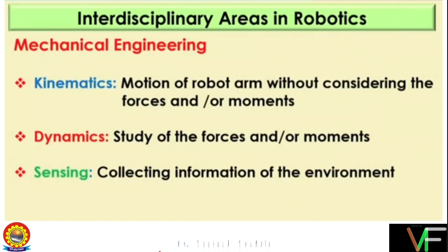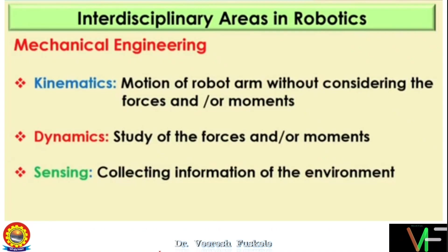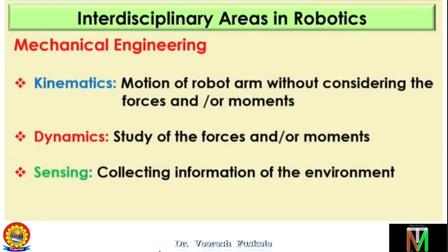Next we have dynamics. Dynamics includes information about the force required to move a linear joint, or in the case of a rotary joint, it will be torque. In the case of a linear joint, you calculate forces; for a rotary joint, you calculate torque. For example, if we want to lift a weight, we need to know what torque the motor must apply to lift that load.